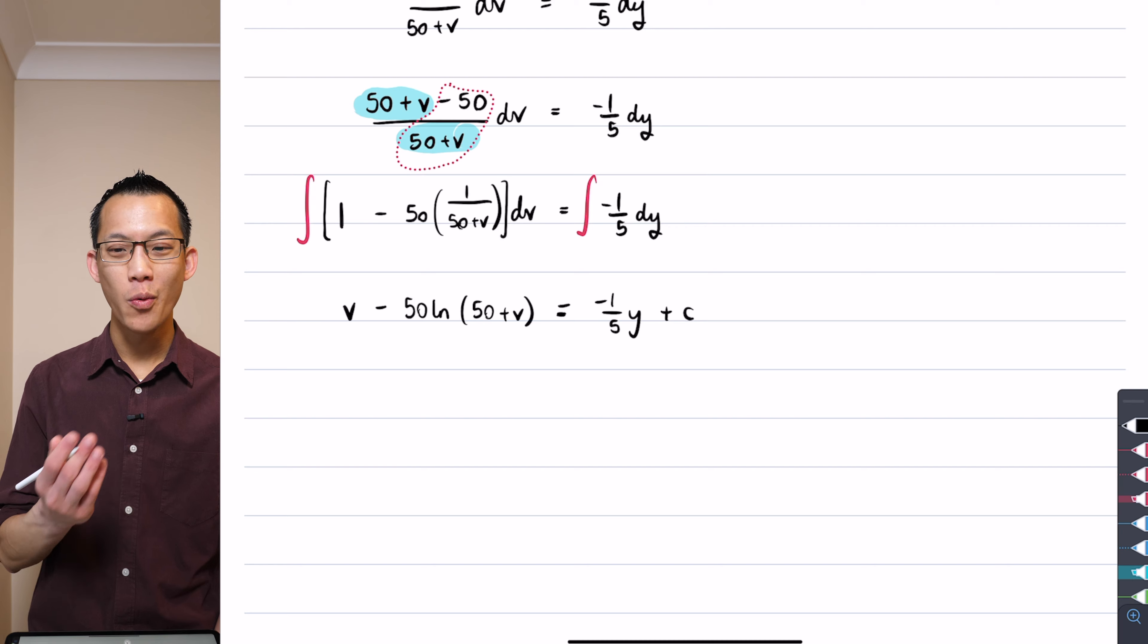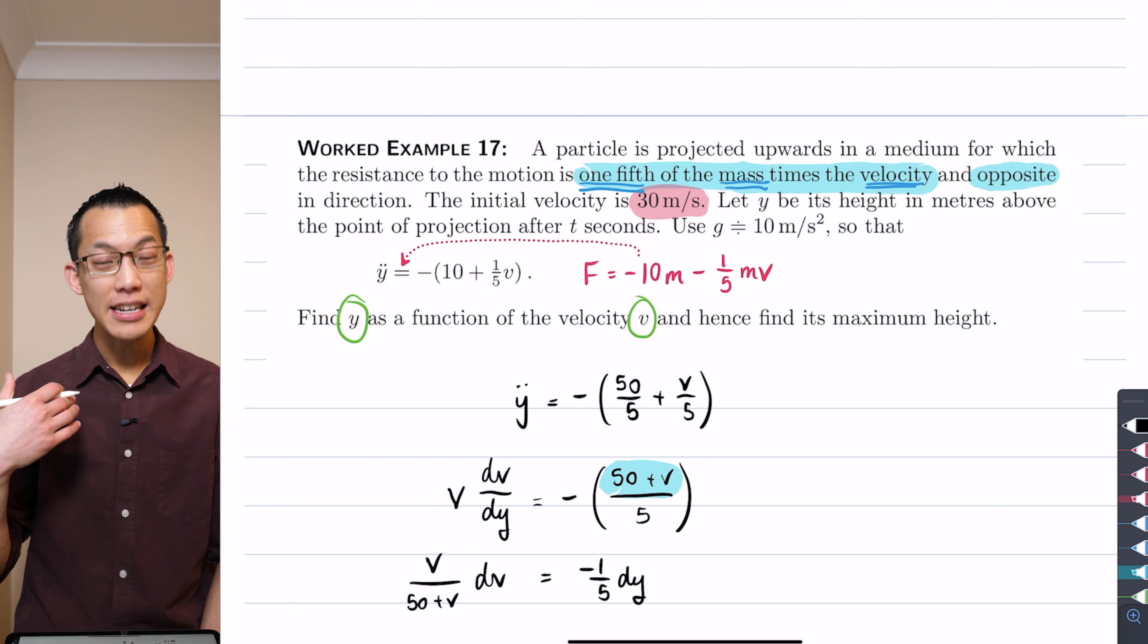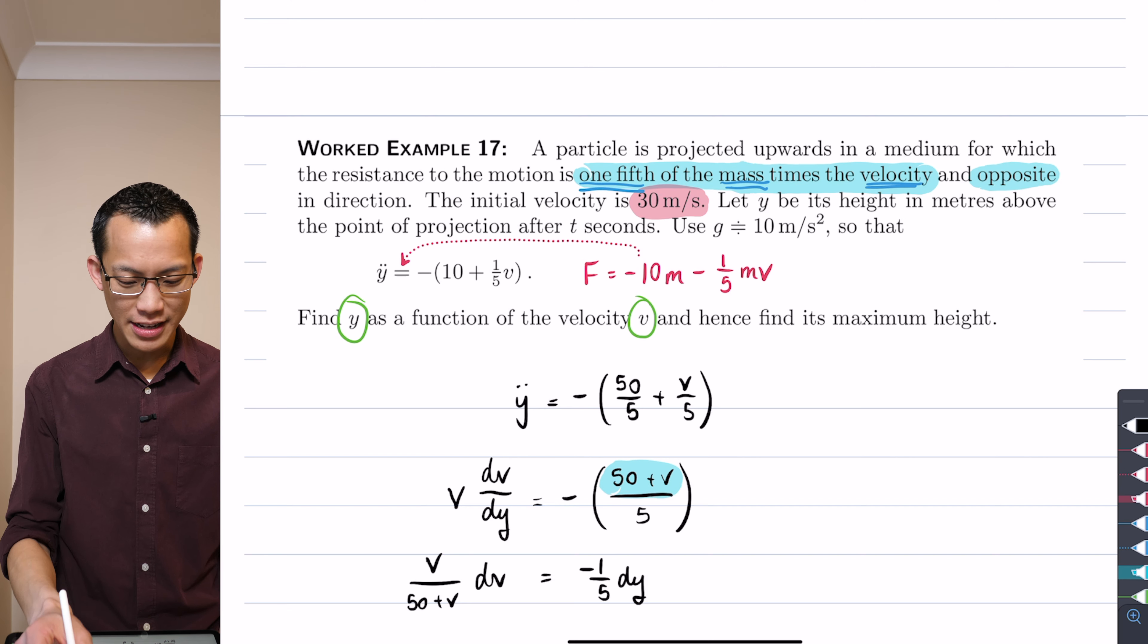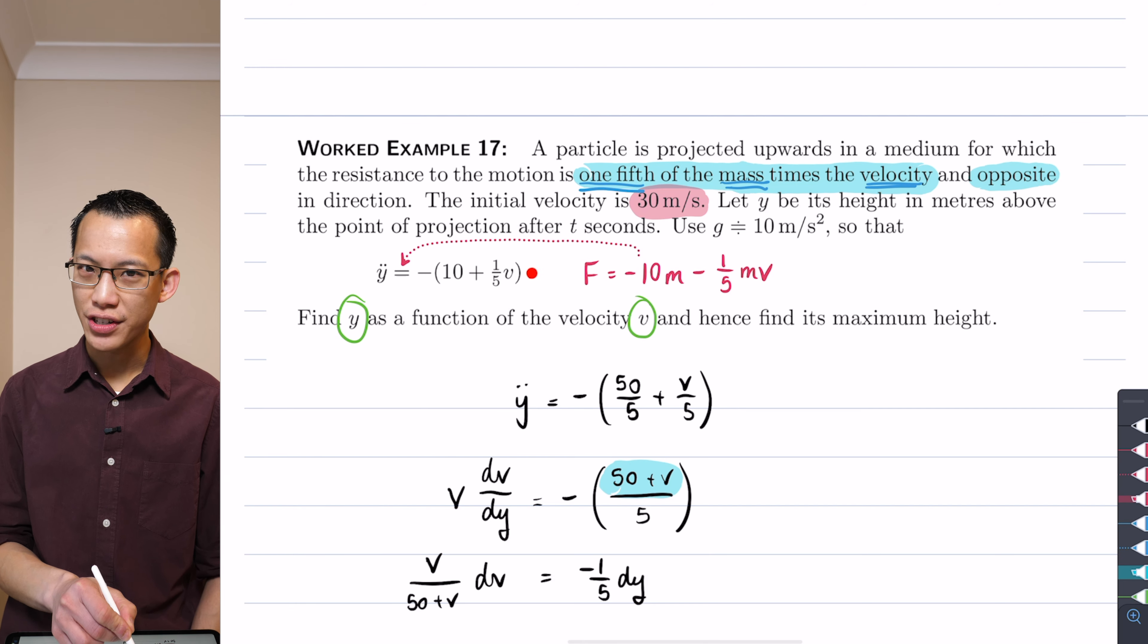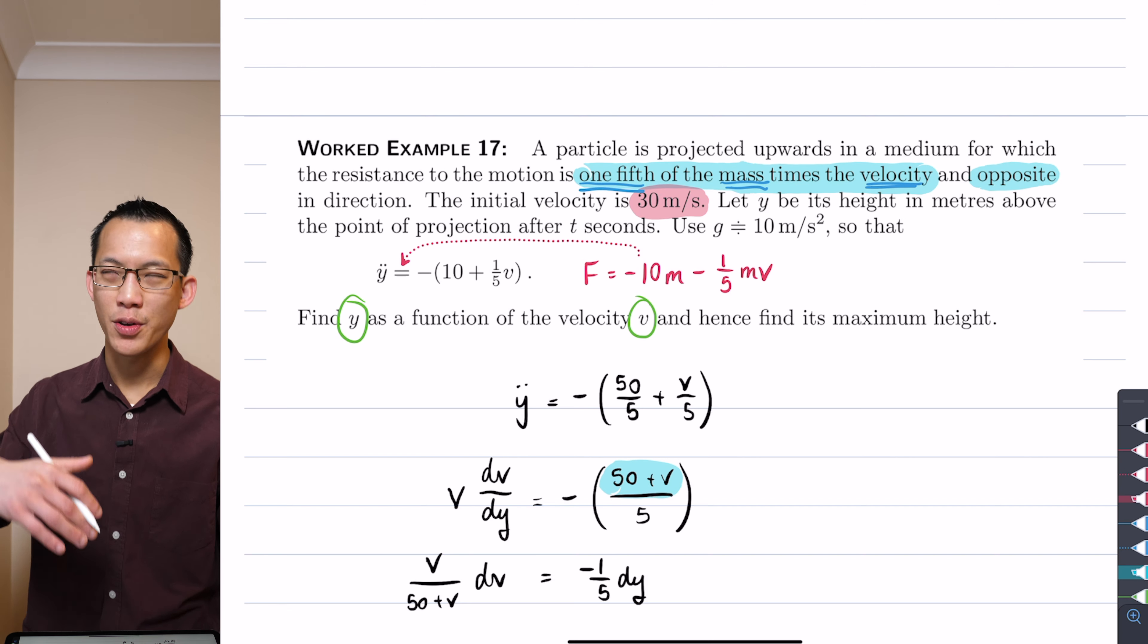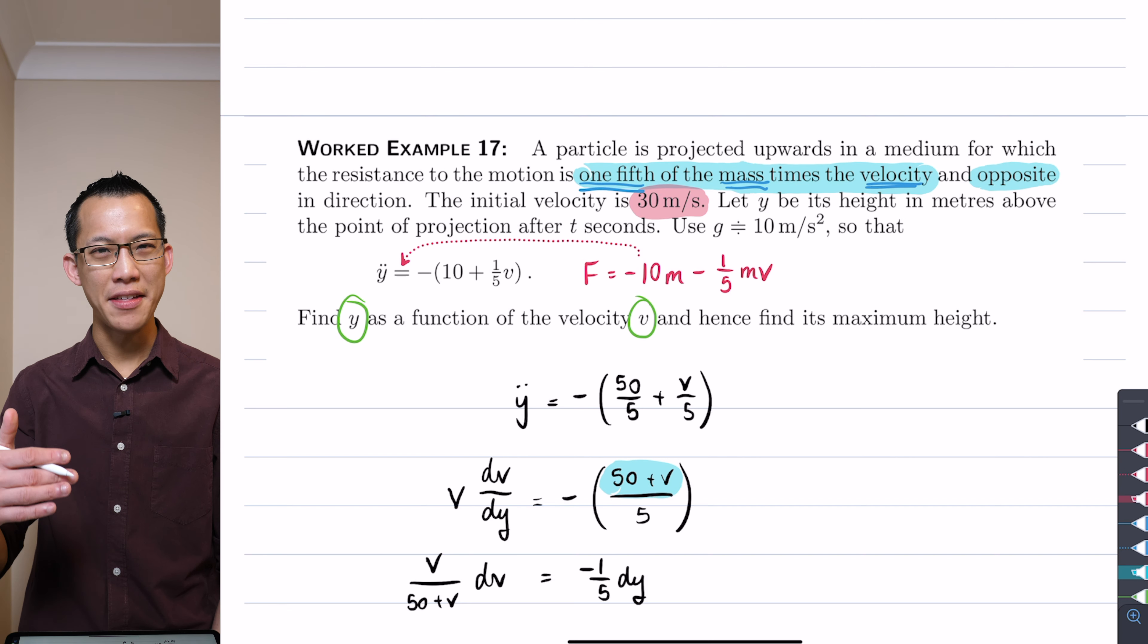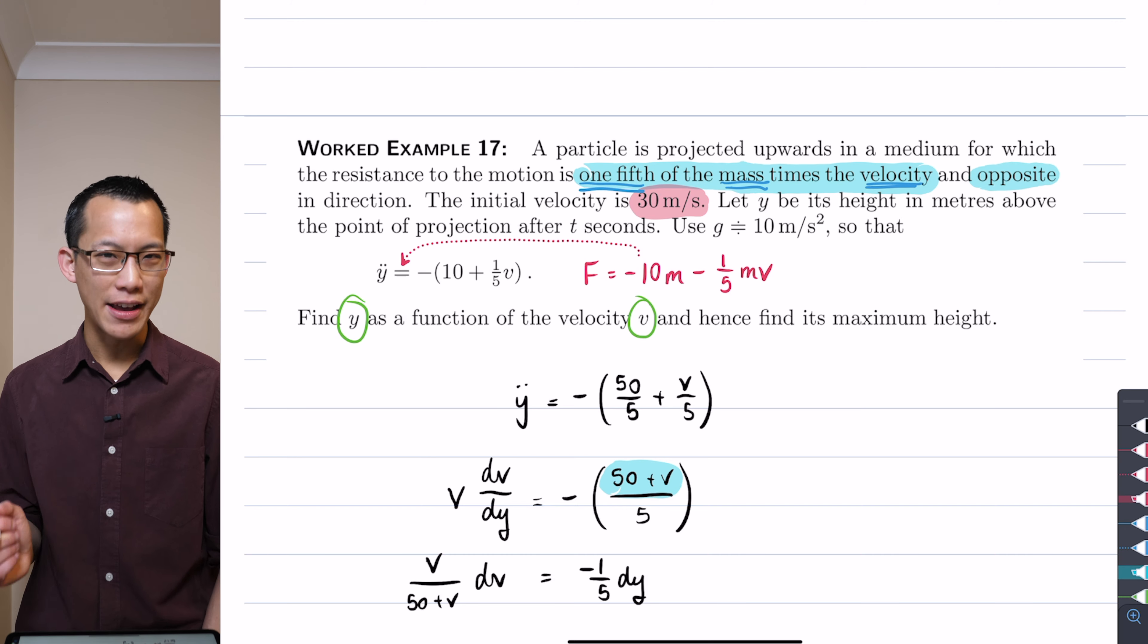Now probably the way I would say is if you go back to the question, you've got an initial velocity, and even though it's kind of implied, it says that the particle is projected upwards in a medium and y is the point of projection. So we can define if the point of projection is the height above the point of projection as y, then the point of projection itself has to be by definition y equals zero.